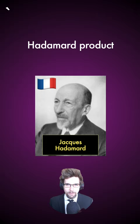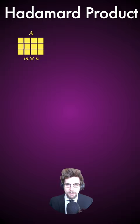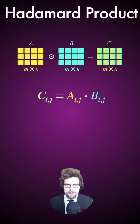The Hadamard product of matrices A and B is another matrix C with the same size. Each element in C is the product of the corresponding elements in A and B.